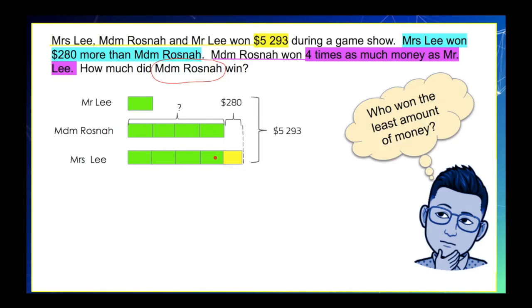Now, we can answer this problem by simply dividing it by 9 units. But before we get the 9 units, we have to get rid of this extra. So, we can say that 9 units is equal to the total amount of winning minus the extra, which is equal to $280. So, if we get the difference between the two, we will get $5,013. So, this is equivalent to the 9 units here.